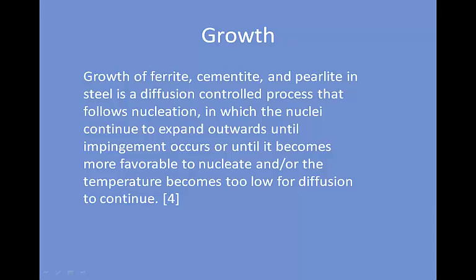Growth immediately follows nucleation. In the example of pearlite and pro-eutectoid phases, growth is a diffusion-controlled process that also relies on undercooling. It is characterized by the expansion of the nuclei at the cost of the original matrix. For plain carbon steel, when the ferrite nuclei forms, there is an excess of carbon in the areas around it, and these form cementite nuclei. Once cementite is formed, there will be an excess of iron surrounding it, and ferrite will form around that cementite. Then more cementite will form around the new ferrite. This pattern continues.